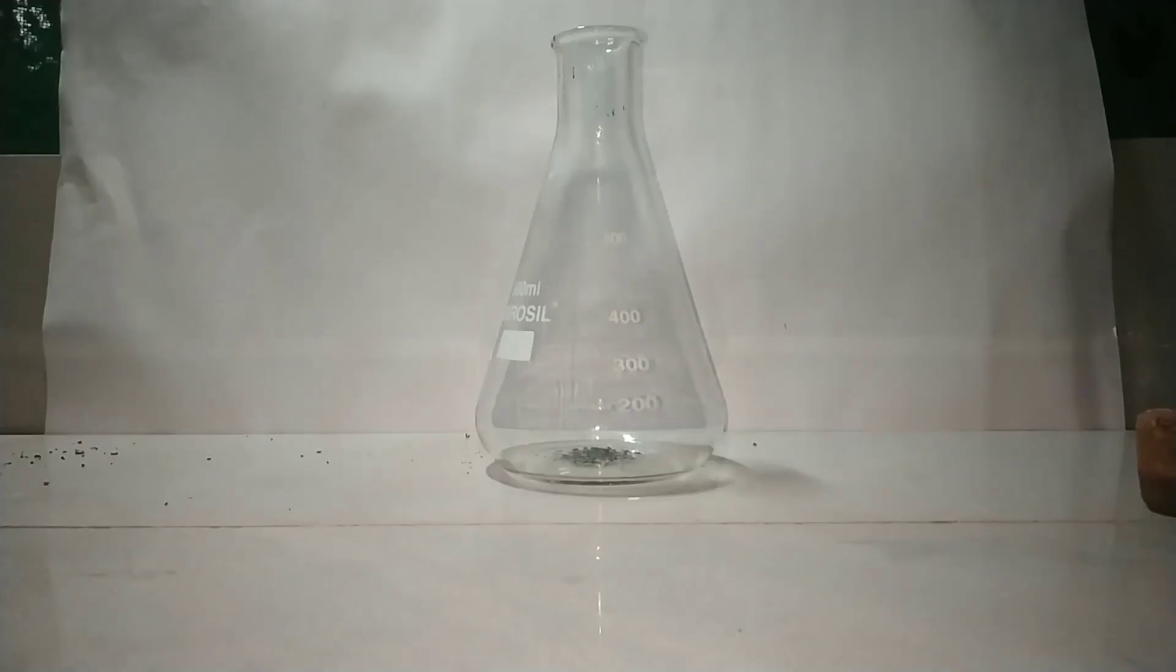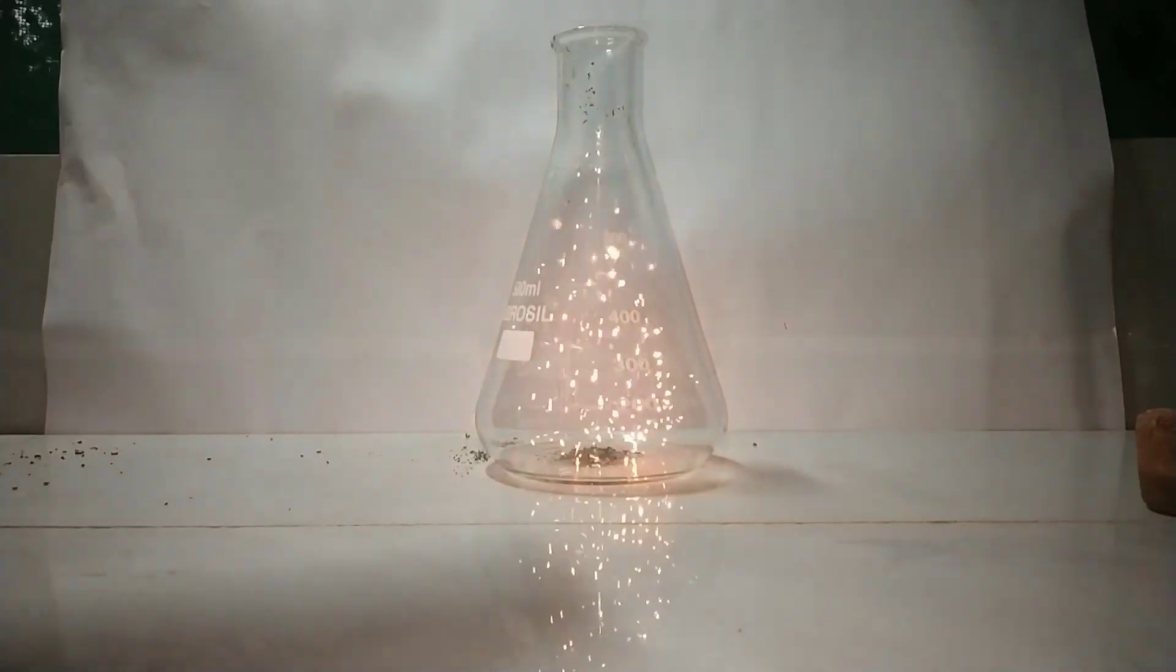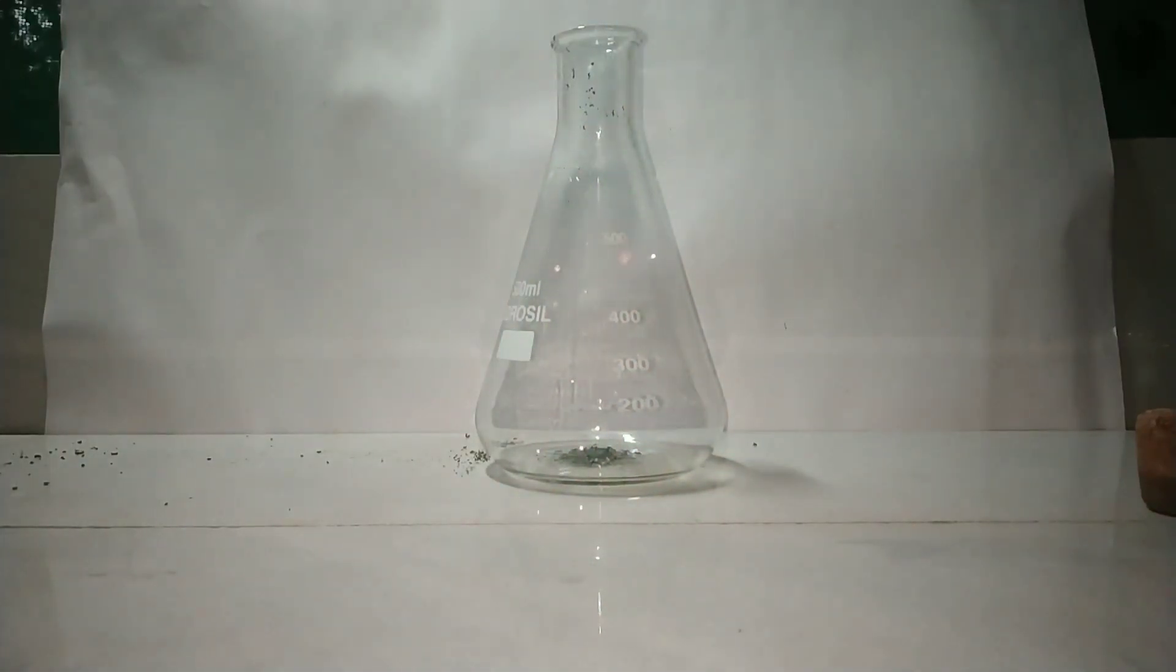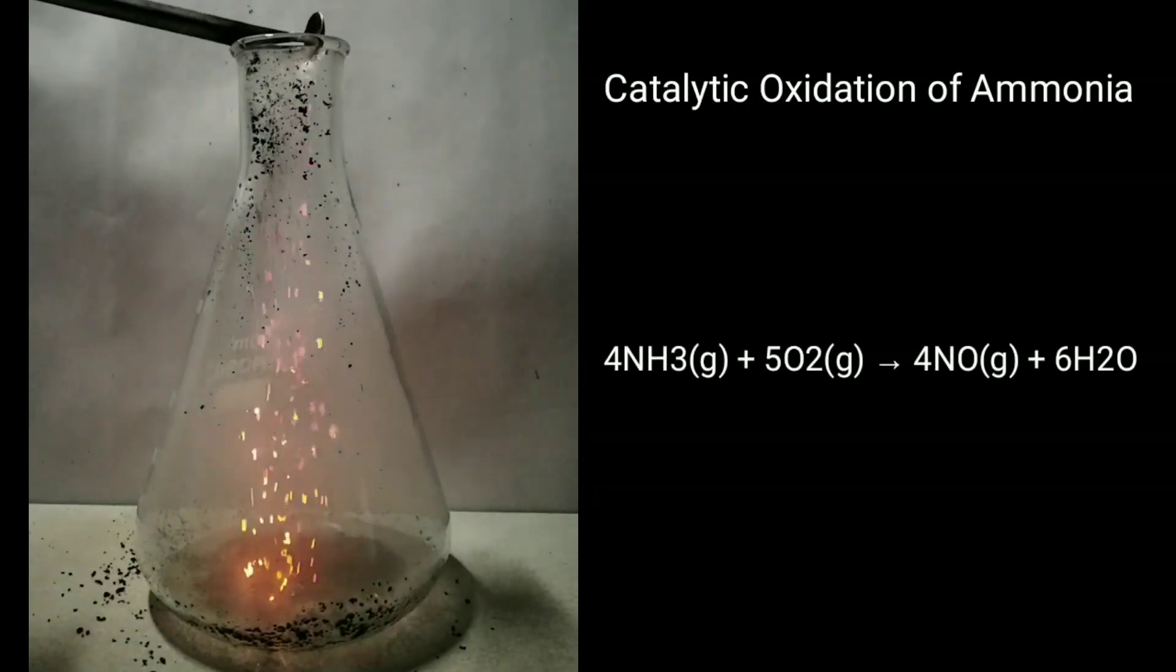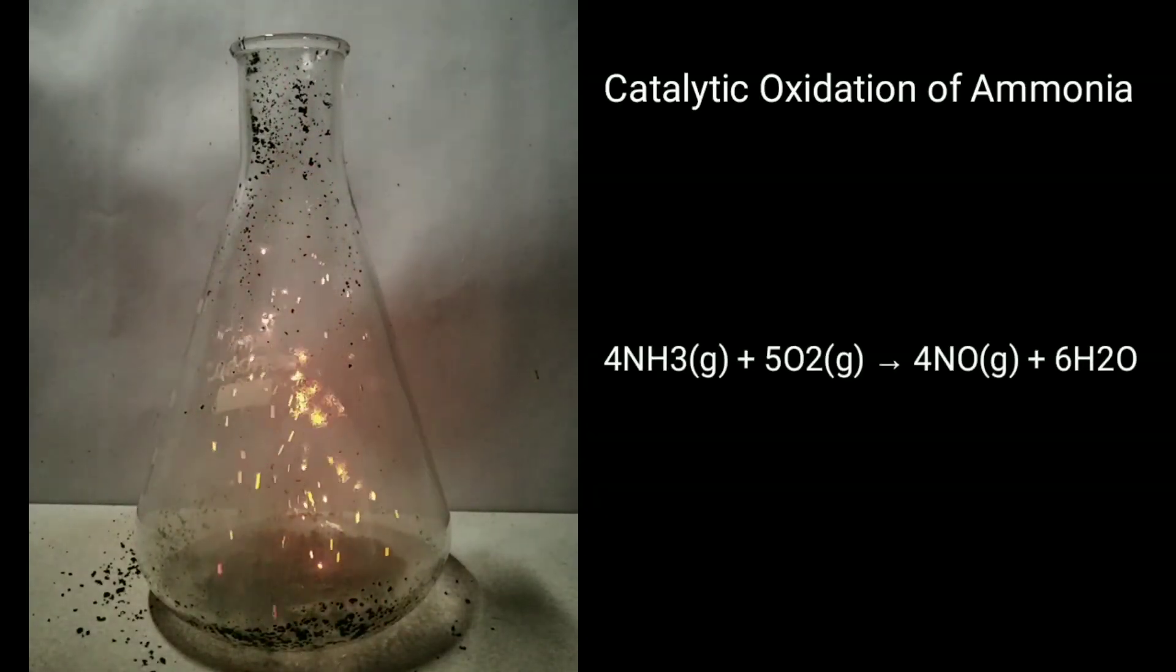Heat up the chromium 3 oxide until it is red hot and we quickly transfer this into the Erlenmeyer flask containing the ammonia. You immediately see flashes of light looking like fireflies inside the flask and this was the oxidation of ammonia with the help of chromium 3 oxide catalyst.